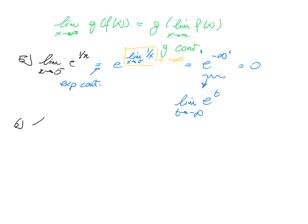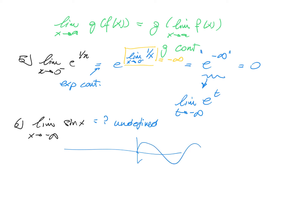Now what happens if you want to calculate the limit of sine x as x goes to minus infinity? The limit is undefined, because sine is an oscillating function — sine will continue to go up and down. At minus infinity, you have no idea what value it takes; it will be between minus 1 and 1, but you cannot give a specific number to it.